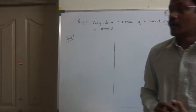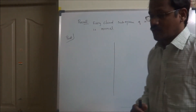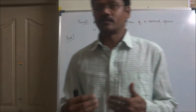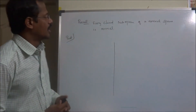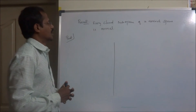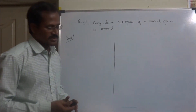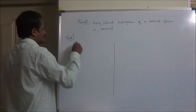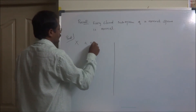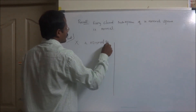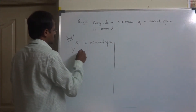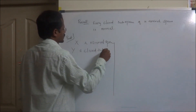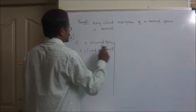So the question is: is it possible to say that some kind of subspace of a normal space is normal? One possible answer is that a closed subspace of a normal space is normal. For the proof, assume X is a normal space and Y is a closed subspace of X.